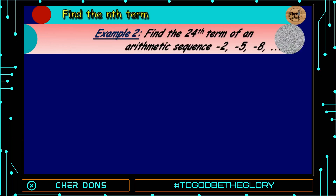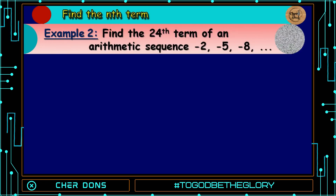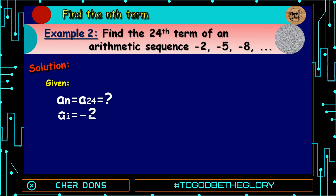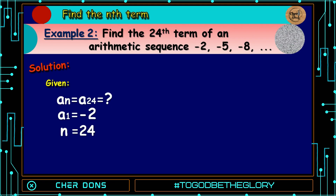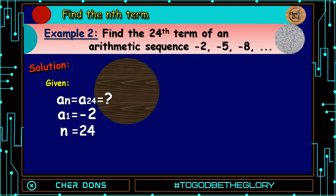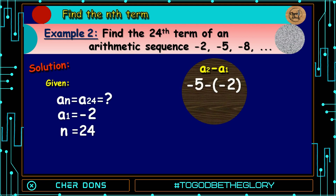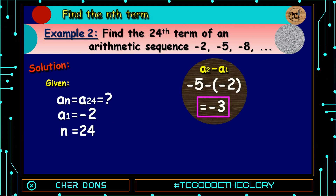Example 2: Find the 24th term of the arithmetic sequence negative 2, negative 5, negative 8, and so on. Given: a sub n equals a sub 24, unknown. A sub 1 equals negative 2, n is 24. The common difference: A2 minus A1, that is negative 5 minus negative 2, equals negative 3. So d equals negative 3.